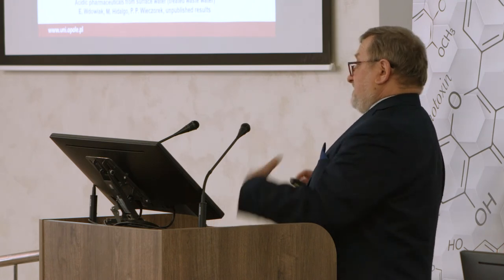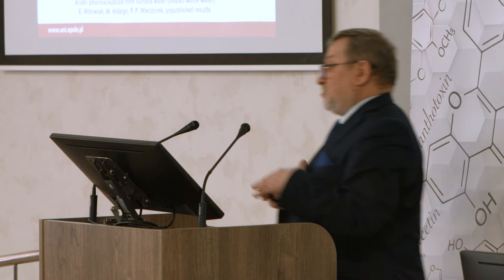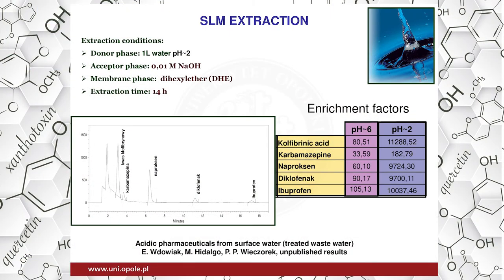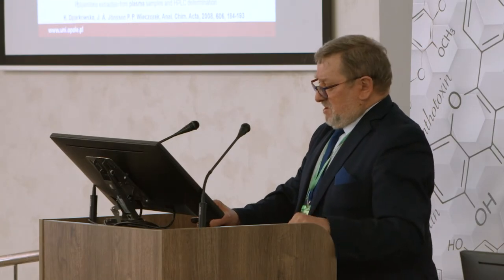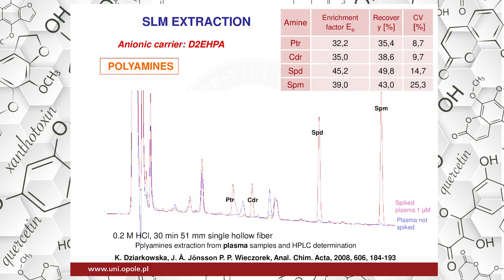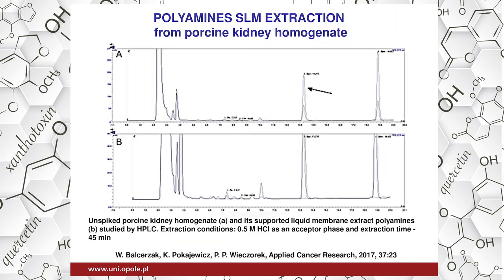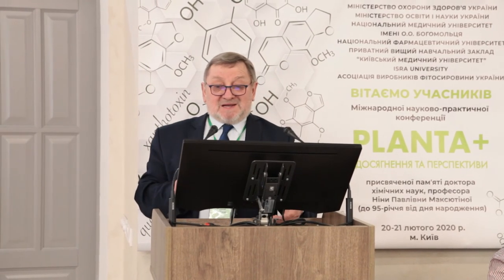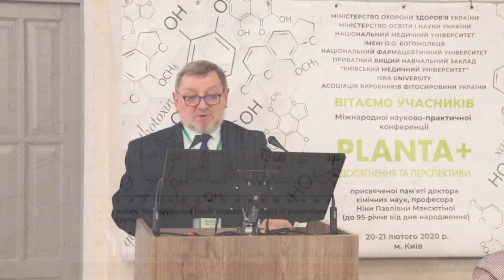That means we can analyze at very low concentrations — it's impossible to do it without such preparation methods. We also use this for extracting polyamines. We have a project in which we try to find cancer markers, and polyamines are among them. First we elaborate the analytical method, after that we use it for real samples — here in kidney homogenate and from urine samples.